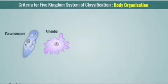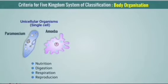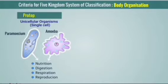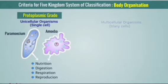In unicellular organisms like Paramecium and Amoeba, nutrition, digestion, respiration, and reproduction are all carried out by a single cell. So this is called protoplasmic organization, or unicellular organization.